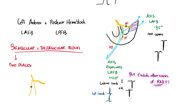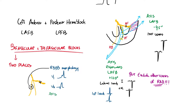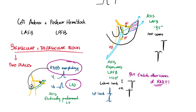We're going to block the left anterior fascicle and the right bundle branch. Since the right bundle is blocked, you will get a right bundle branch block morphology in V1 and V6, which we've already discussed — V1 and V6 are going to look like this. Additionally, due to the left anterior hemiblock, you get leftward axis deviation, because a larger chunk of the myocardium is supplied by the left anterior fascicle. Combining RBBB morphology with left axis deviation allows you to diagnose a bifascicular block.